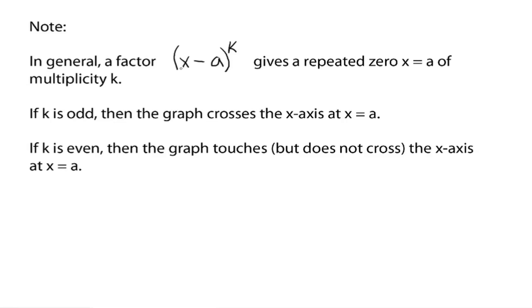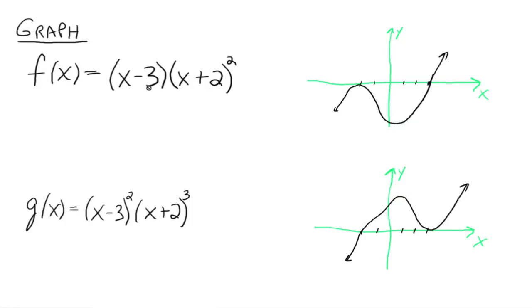In general, a factor x minus a raised to the k power gives a repeated zero, x equals a. Everybody agree if x is a, then this is zero. And we say that it has a repeated zero, x equals a, of multiplicity k, whatever the exponent is. Now note, if k is odd, then the graph crosses the x-axis at that x equals a. That was like when we had x minus 3 to the first power, got an odd, so it passed through. And x plus 2 to the cube power, so it passed through on negative 2.